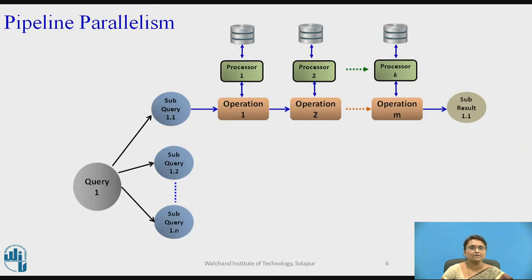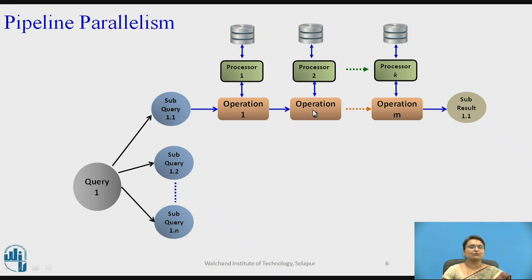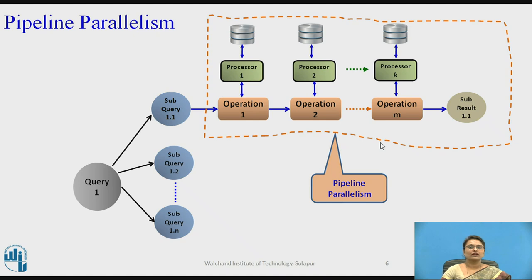Rarely does independent parallelism work in practice. In the pipeline scenario, operations 1, 2, through m each have processors associated with them, and the result of operation 1 is provided as input to operation 2, and again the result is provided to operation m. Operation 2 is not waiting for the completion of operation 1 — as data is generated for operation 1, it is continuously given to operation 2. These operations work in parallel, and this is called pipeline parallelism.